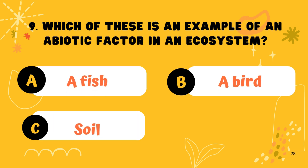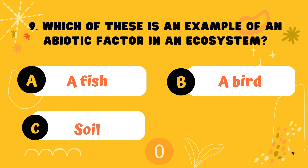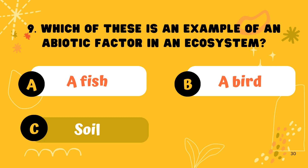Question 9. Which of these is an example of an abiotic factor in an ecosystem? Option C: Soil.